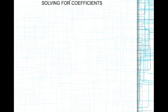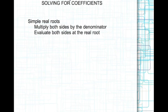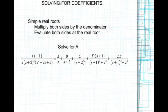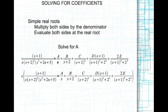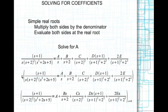Let's look at solving for coefficients in the partial fraction expansion. For simple roots, multiply both sides by the denominator of the simple root and evaluate both sides at the real root. In this example, 1/s — with s equal to 0 as a simple root — let's solve for a. Multiply both sides by s: this s cancels with this s, and this s cancels with this s, leaving a. All other terms end up having s on top, so when we evaluate at s equal to 0 those terms drop out, leaving a equal to 1 divided by 20.